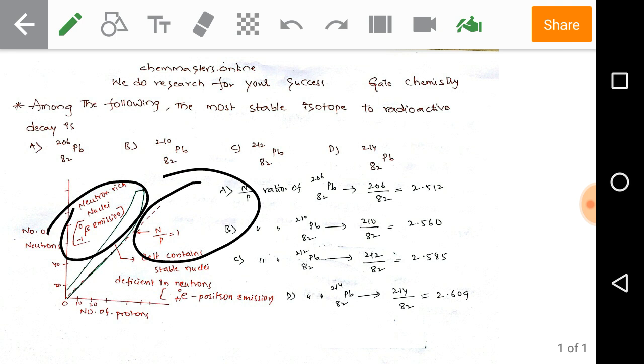Simply remember that nuclei rich in neutrons emit beta particles. On the other hand, if nuclei are deficient in neutrons, those nuclei are unstable and they emit positrons.